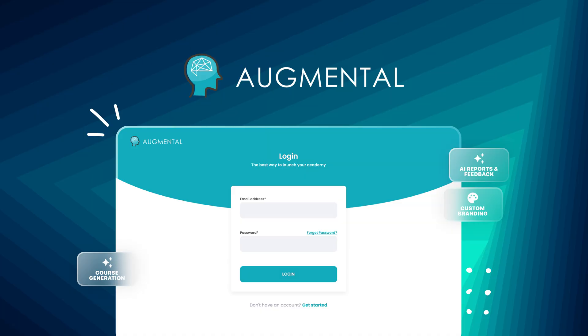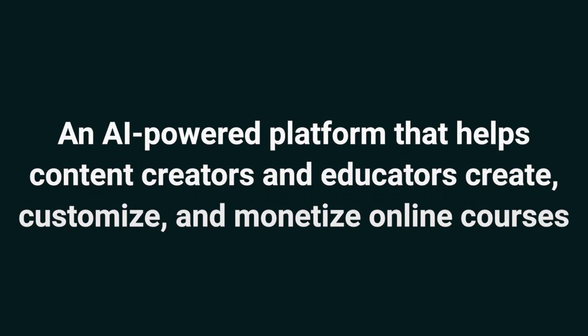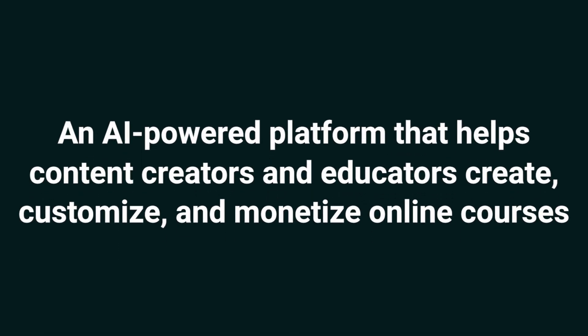Sup Sumo-lings, it's Jay with AppSumo, the best place to get insane deals on business software. Today we're taking a look at Augmental Learning, an AI-powered platform that helps content creators and educators create, customize, and monetize online courses.